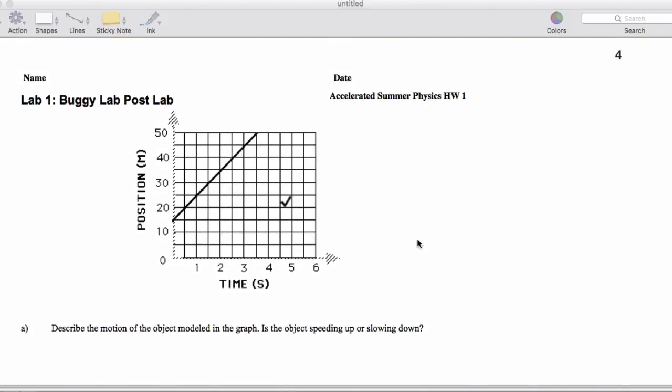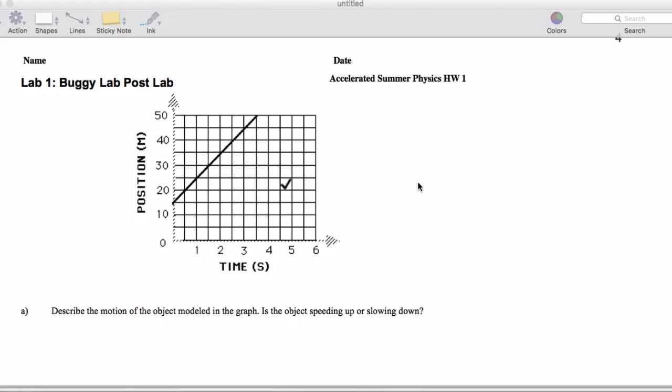All right, so let's take a look at your first homework. This is the post-buggy lab, kind of, just jump in, I can't even talk right now. So it says, describe the motion of the object modeled in the graph. Is it speeding up or slowing down?